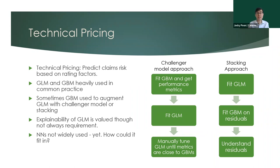GBMs are starting to get used more now. One approach is a challenger model: you think you have a pretty good GLM, so you fit a GBM and get performance metrics, then benchmark the GLM against the GBM. You'll manually tweak your GLM until it gets good enough compared to the best GBM you've found.